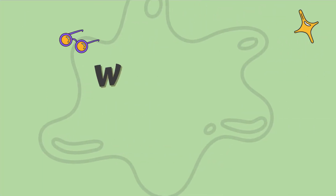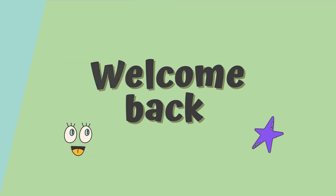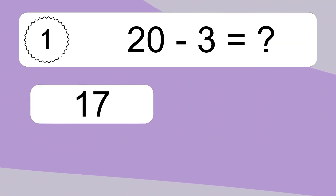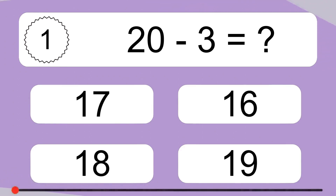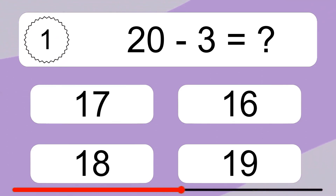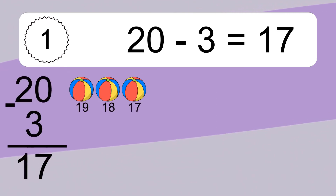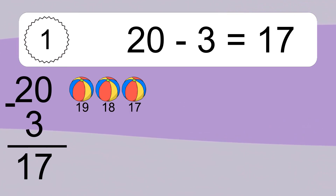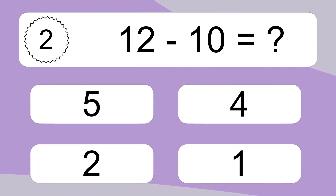Hey and welcome to a new video! Get ready to tackle fun challenges and test your skills. Let's get started! 20 minus 3 equals what? 20 minus 3 equals 17. Let's count it: 19, 18, 17.